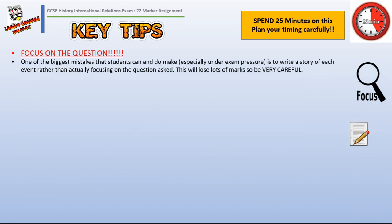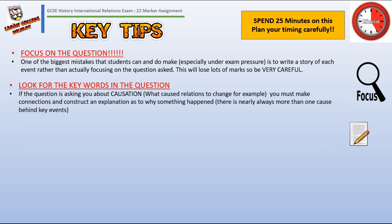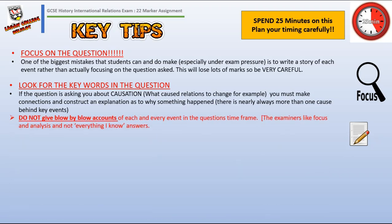A common problem with the 22-marker: you have to answer what the question is actually saying. You can't just tell three stories about Hungary, Czechoslovakia, Vietnam, and Afghanistan. If it's asking about causation, you focus on causation. A lot of students lose lots of marks by not following that guidance — don't give blow-by-blow accounts of every event in the timeframe. Examiners get frustrated reading waffle. They want clear, concise, focused, analytical answers — that's the skill you're being assessed on: answering the question given, not everything you know.